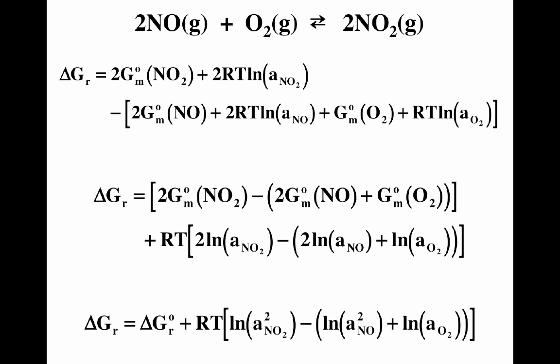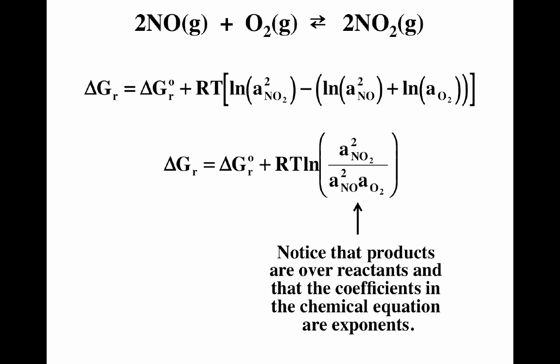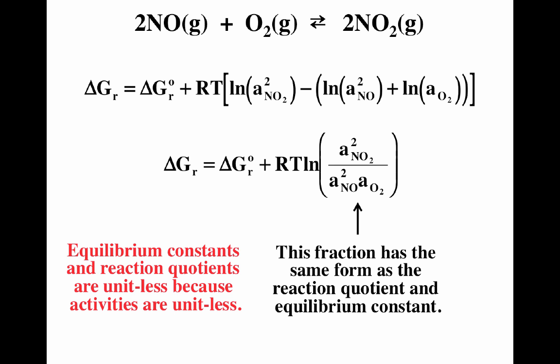We can simplify: take the G terms and put them in the first parentheses, then combine the natural log terms. The first term in the middle equation is just equal to delta G standard — that's products minus reactants. Combining the second term gives us RT times the bracket of natural log NO2 minus etc. Using the rules for logs to simplify, we end up with delta G equals delta G-naught plus RT natural log of A(NO2) squared over A(NO) squared times A(O2). Notice this is products over reactants with coefficients becoming exponents — that's actually where the expressions for equilibrium constants and reaction quotients come from.